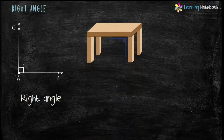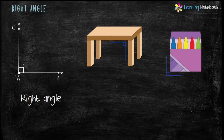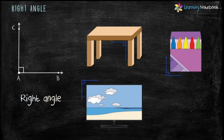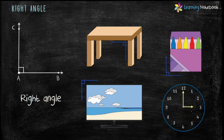Right angles can be easily seen in our daily lives. First example is a table — legs of the table make a right angle with its top. Second is a color box — edges of a color box make a right angle. Third is a television set — edges of a television set make a right angle. Fourth is a clock — hands of a clock make a right angle at three o'clock.